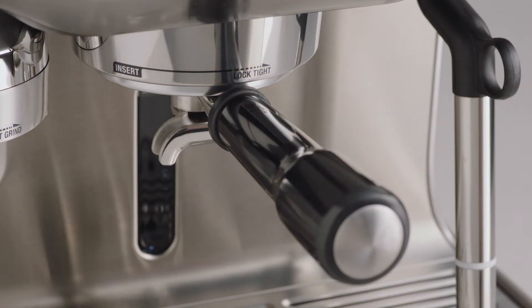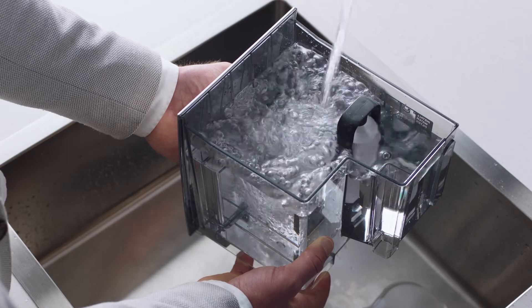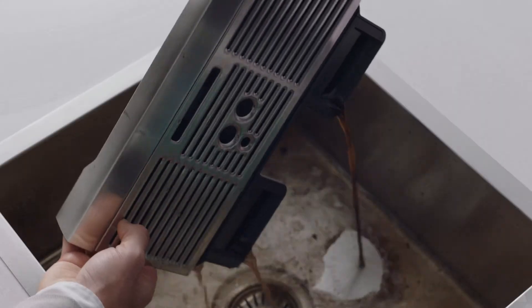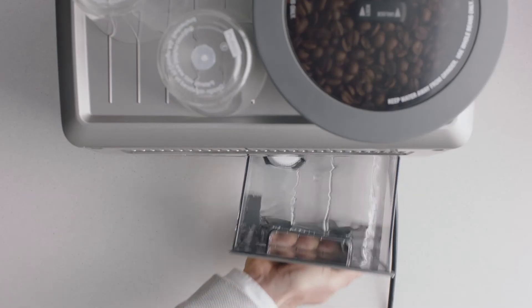Insert and lock the portafilter into the group head. Ensure that the water tank is filled with cold water to the max line and the drip tray is empty.